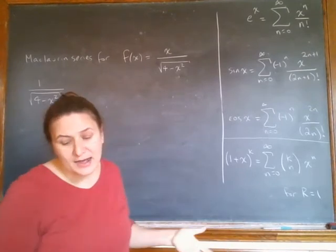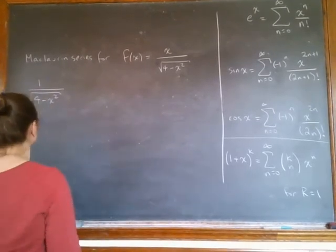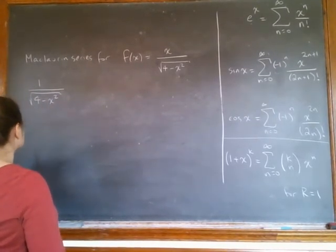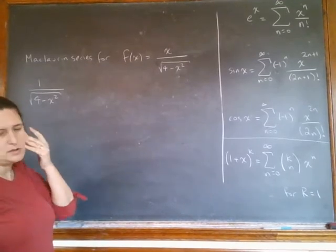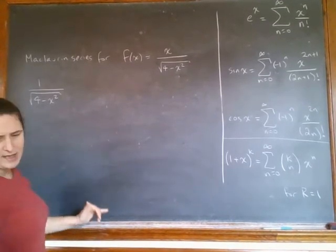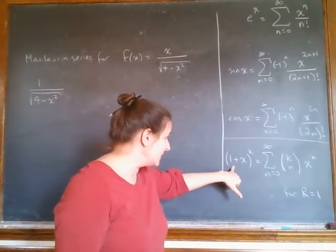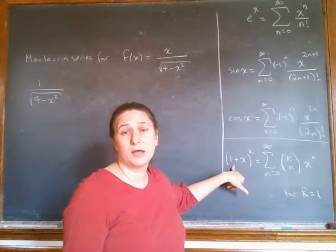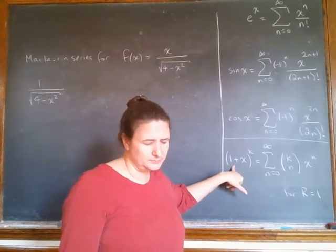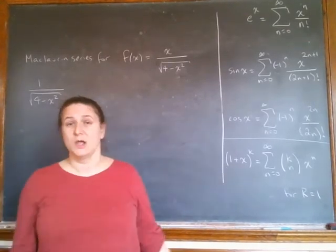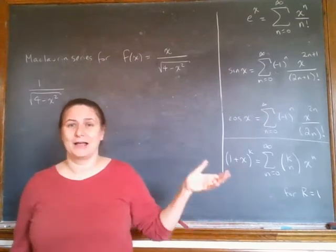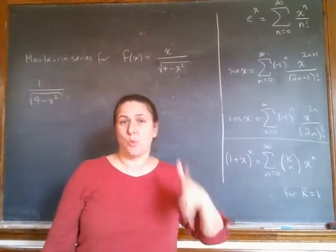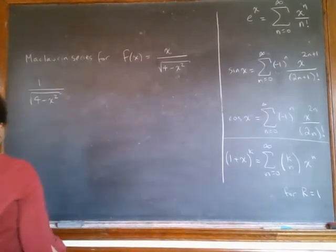This is kind of like this if I take k being negative 1 half, and I mess around with this bottom part until it looks like 1 plus something, then I can use this formula. So that is something we can do. So let me write it in that form.